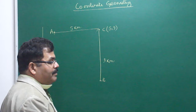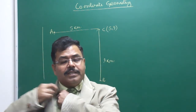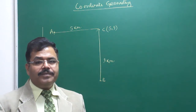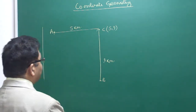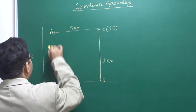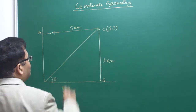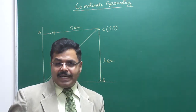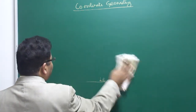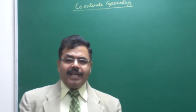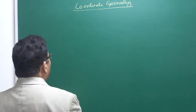One system in which two distances are mentioned is called the Cartesian system, because this theory was given by Descartes, and therefore this system is called the Cartesian system. The other system, in which one distance and an angle are used, is called the Polar system of coordinates. We do not have to study the Polar system right now — we just need to know about the Cartesian system, which is the theory given by the famous mathematician Descartes.